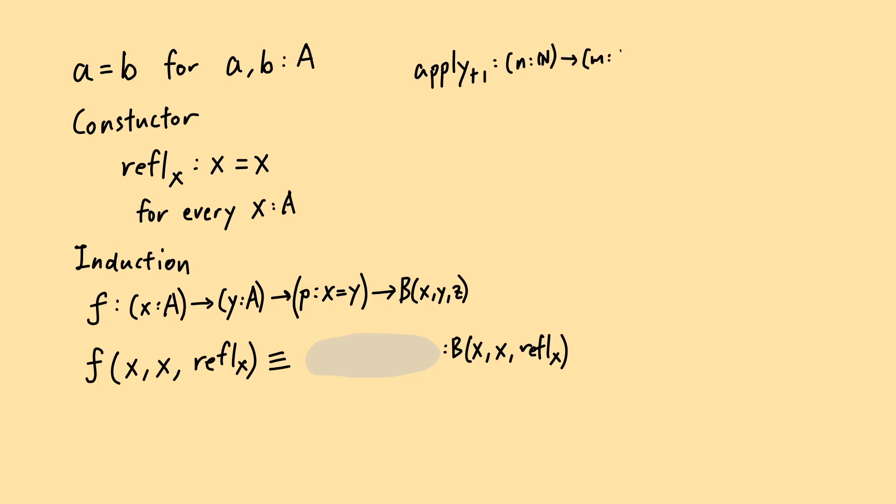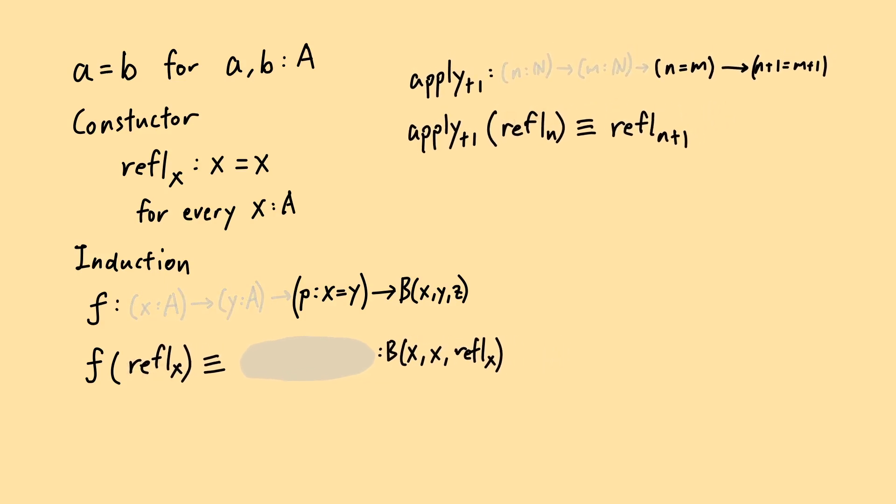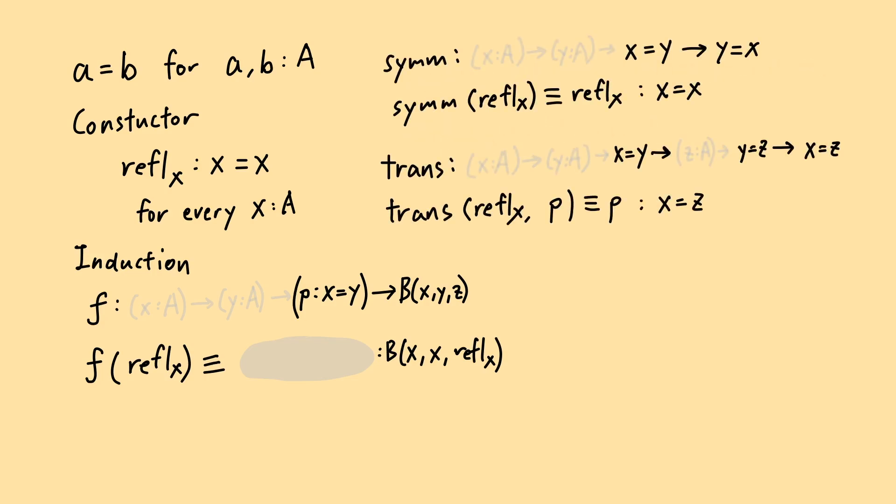Using induction, we can define the apply₊₁ function simply by defining it to be refl(n+1) on n, n, refln. Note that the third argument of f and apply₊₁ can be used to infer the first two arguments, so we can omit them when the element of the identity type is provided. As a side, we can also prove symmetry and transitivity of identity type by induction. These are convincing evidence that the identity type does behave like the traditional equality.